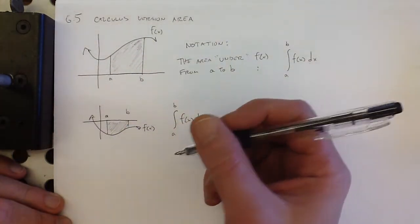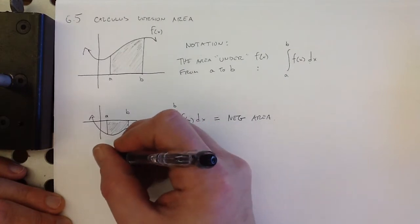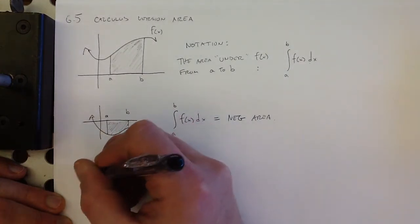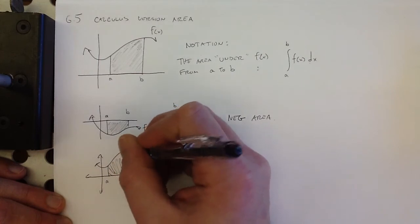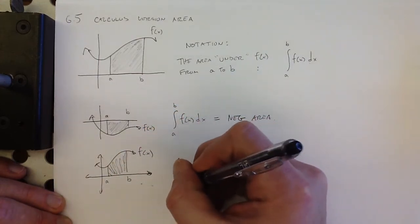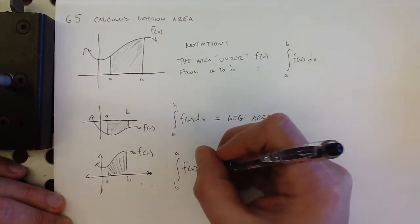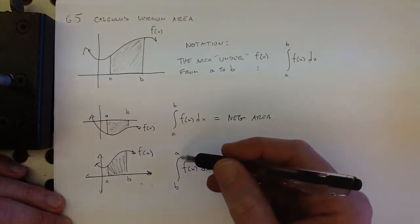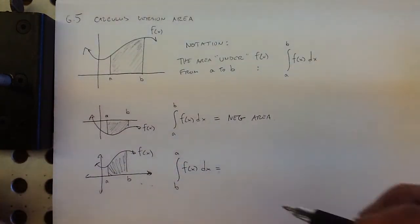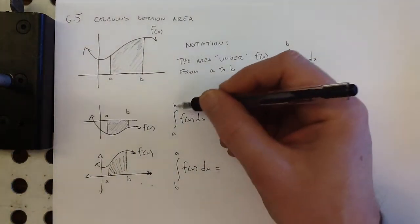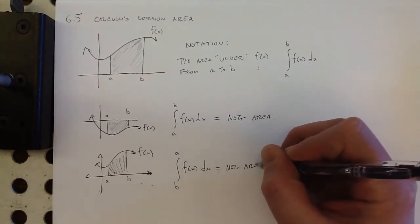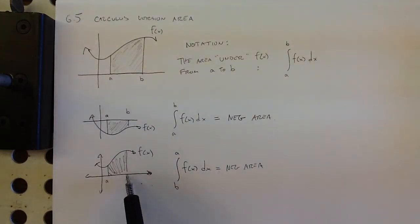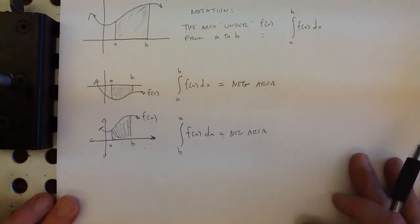And also, what if there's nothing to stop us from writing something like the area from b to a under f of x? There's nothing to stop me from writing that, from putting the numbers in the wrong order. So what if they were in the wrong order? That's also going to give me negative area. If I run it backwards and say I'm going to do the area from b to a now, that makes it switch.